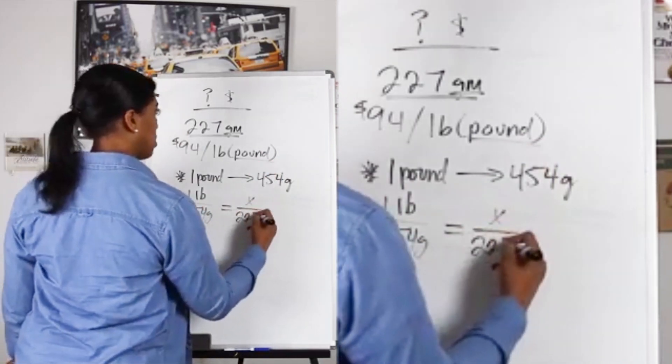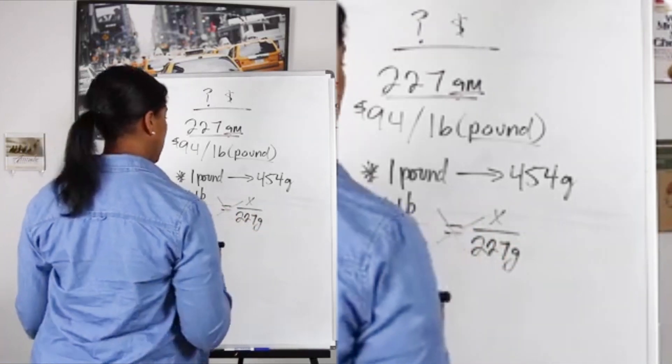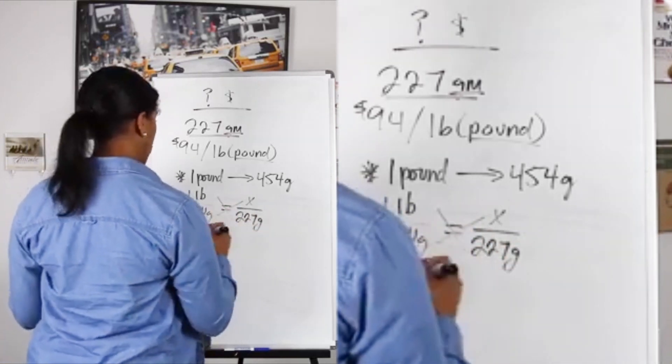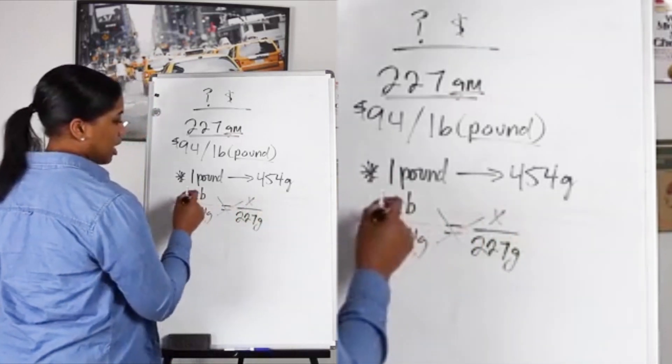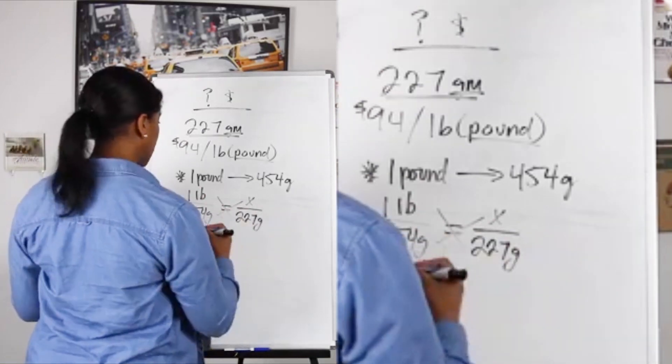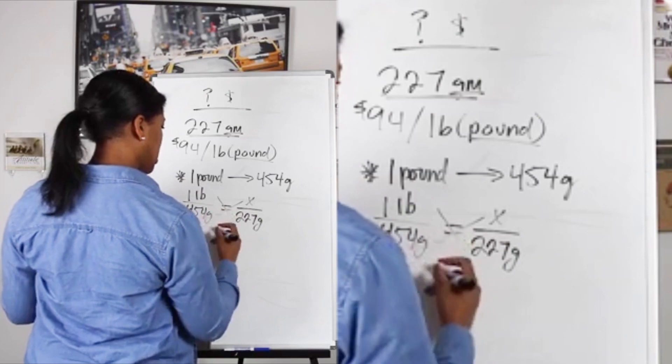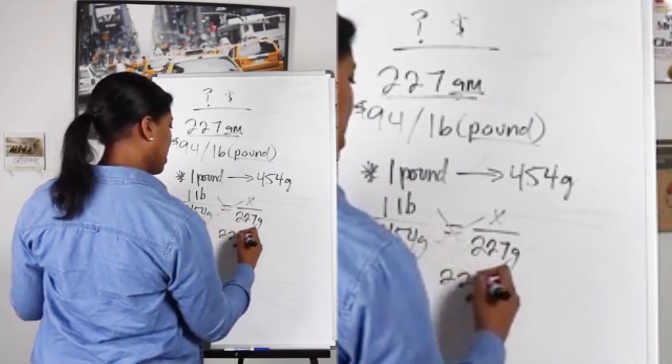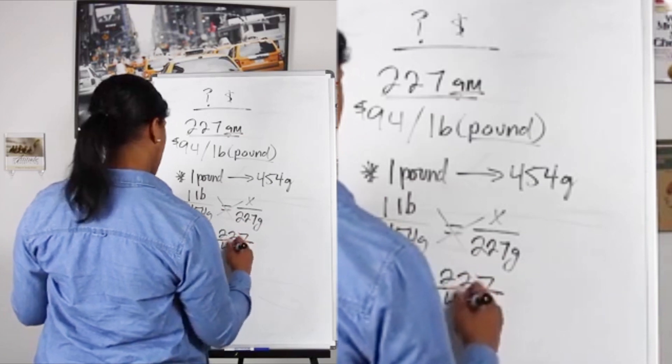equal to 227 grams? You're just going to cross multiply. Once you do the math you should get 454 grams times X, and then 1 times 227, which is just 227. Of course you solve for X, so it should end up being 227 divided by 454.